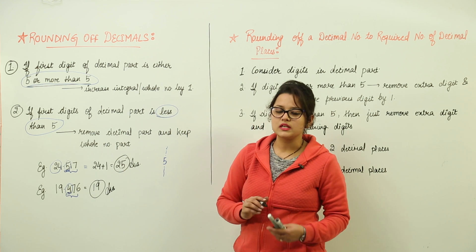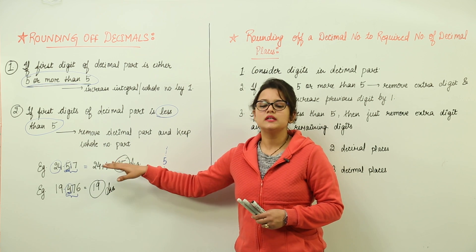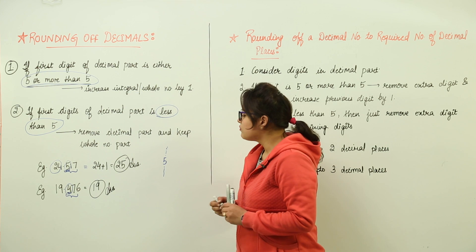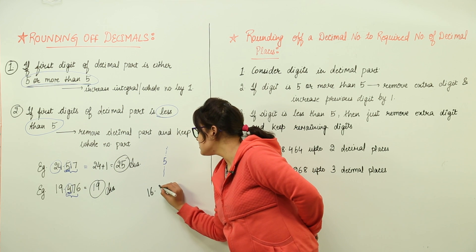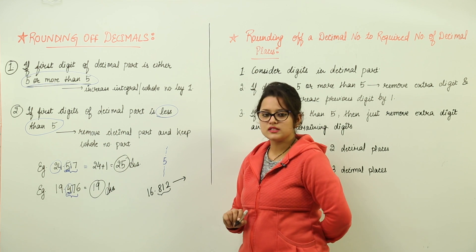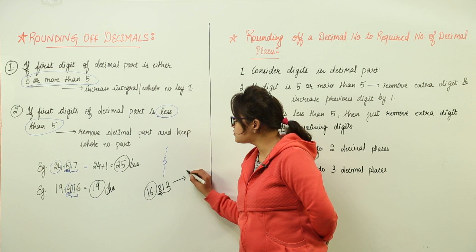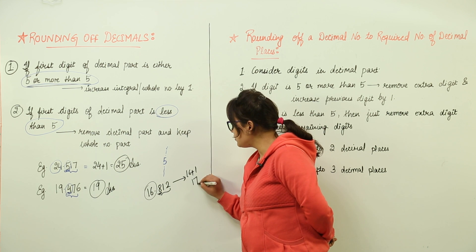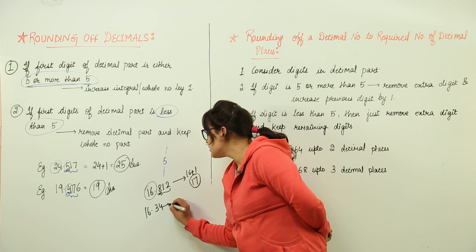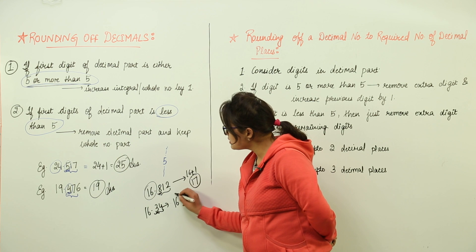Now both cases have been discussed. For rounding off, consider the decimal part only and check the first digit. If the first digit is 5 or more than 5 — for example 16.812, the first digit is 8 which is more than 5 — increase the integral part by 1, so it rounds off to 17. If it is 16.34, the first digit 3 is lesser than 5, so it is written as 16 only.